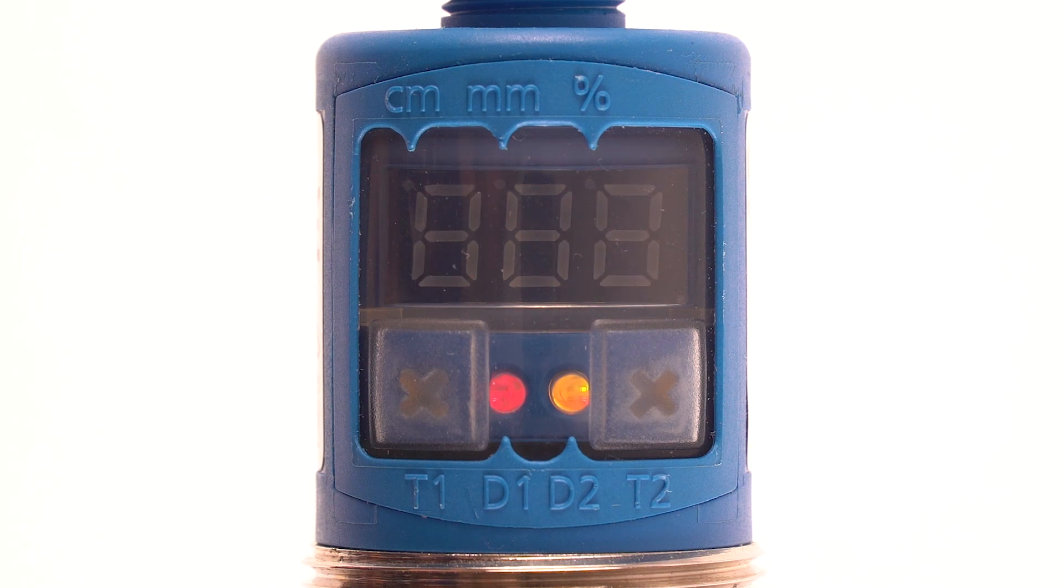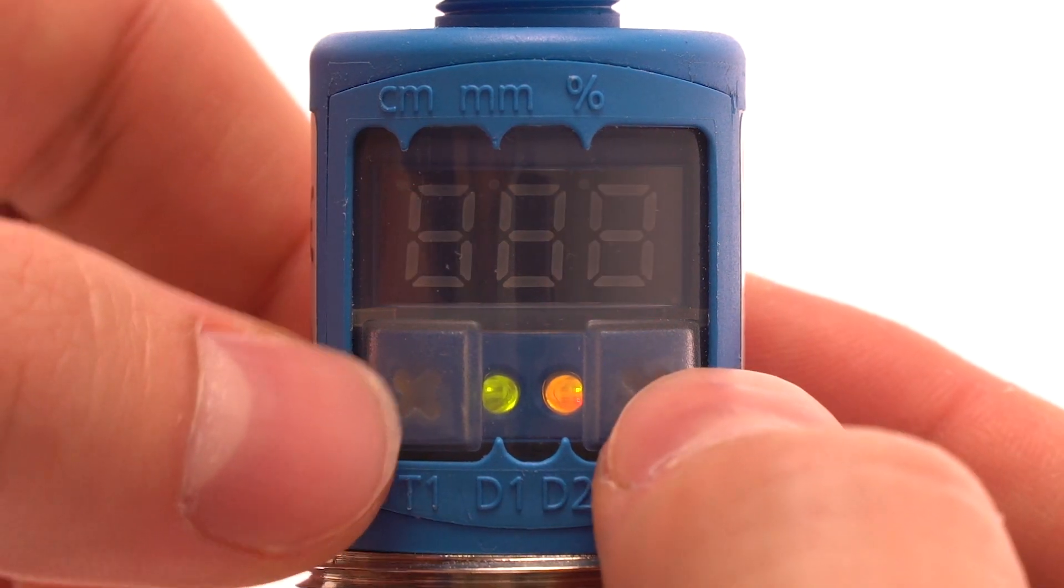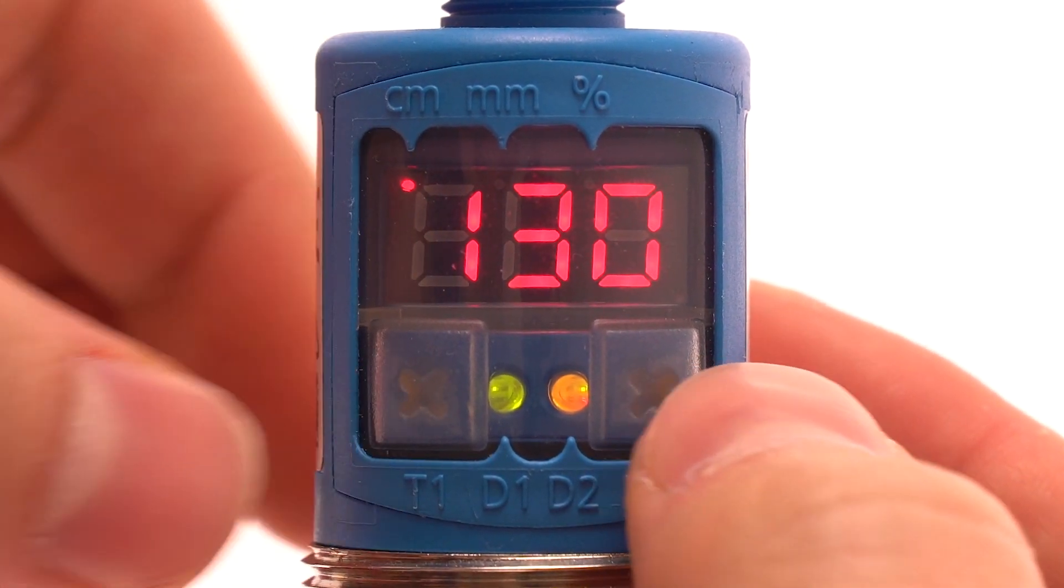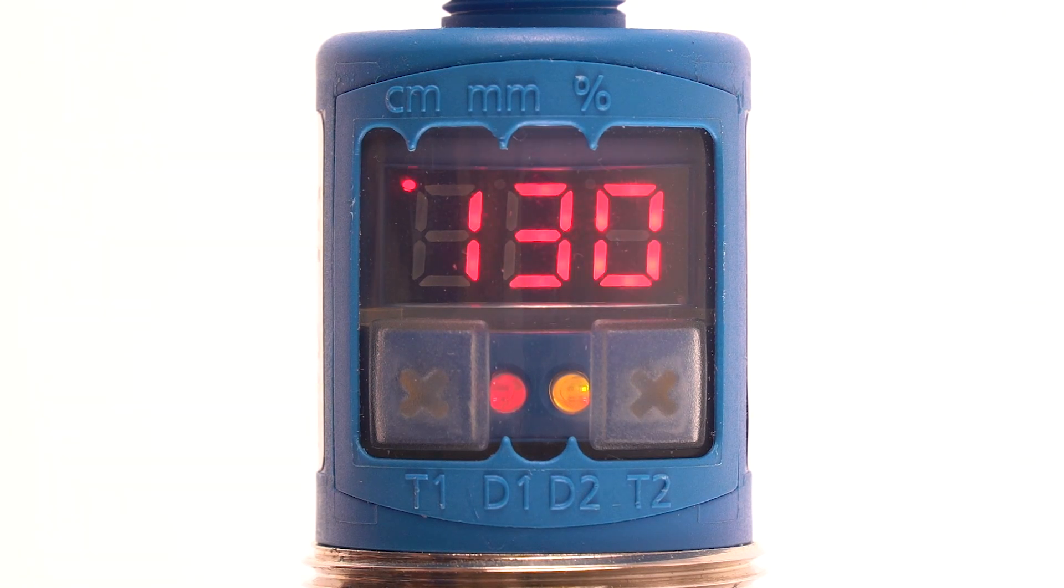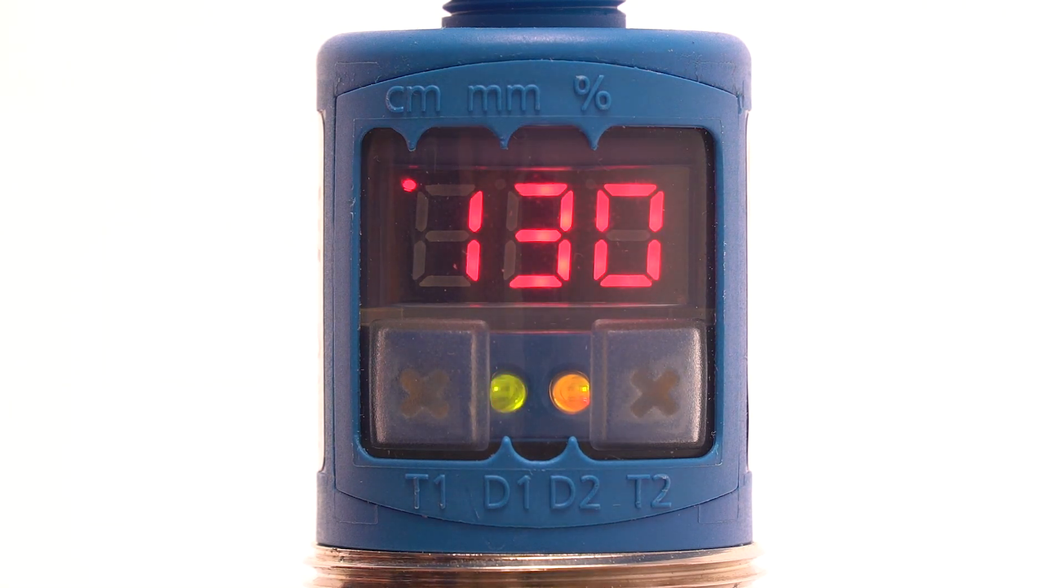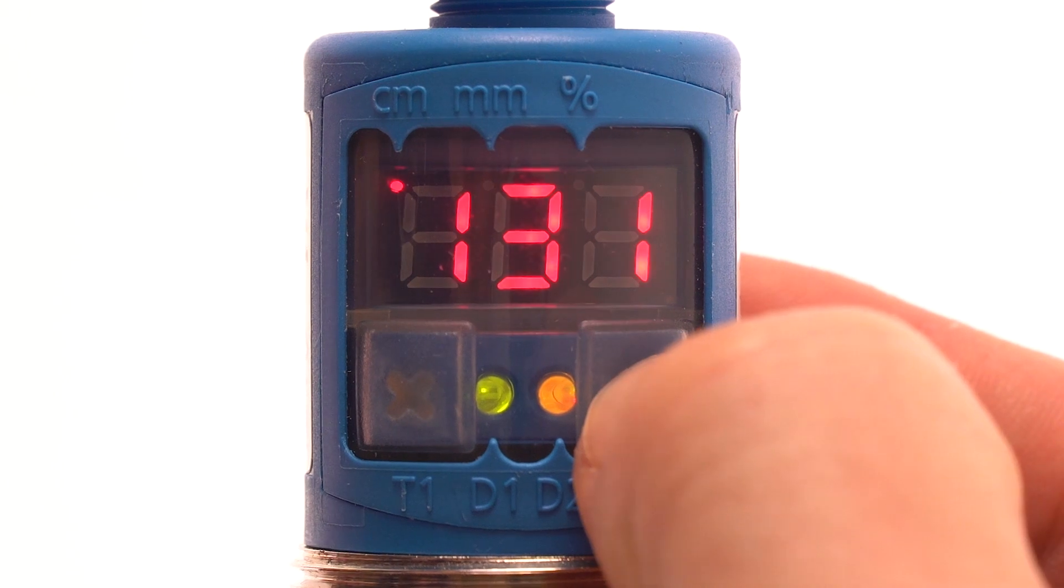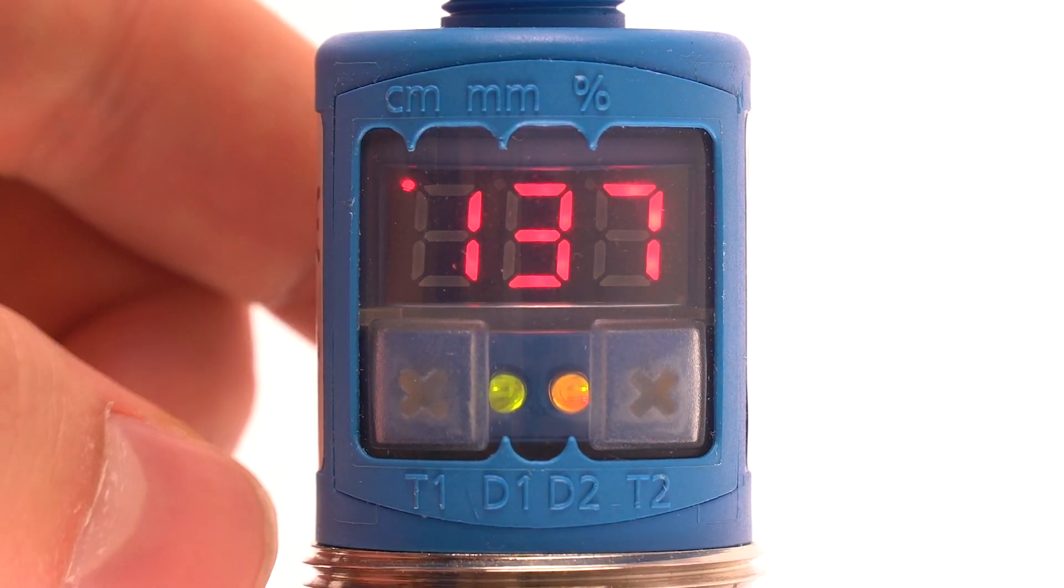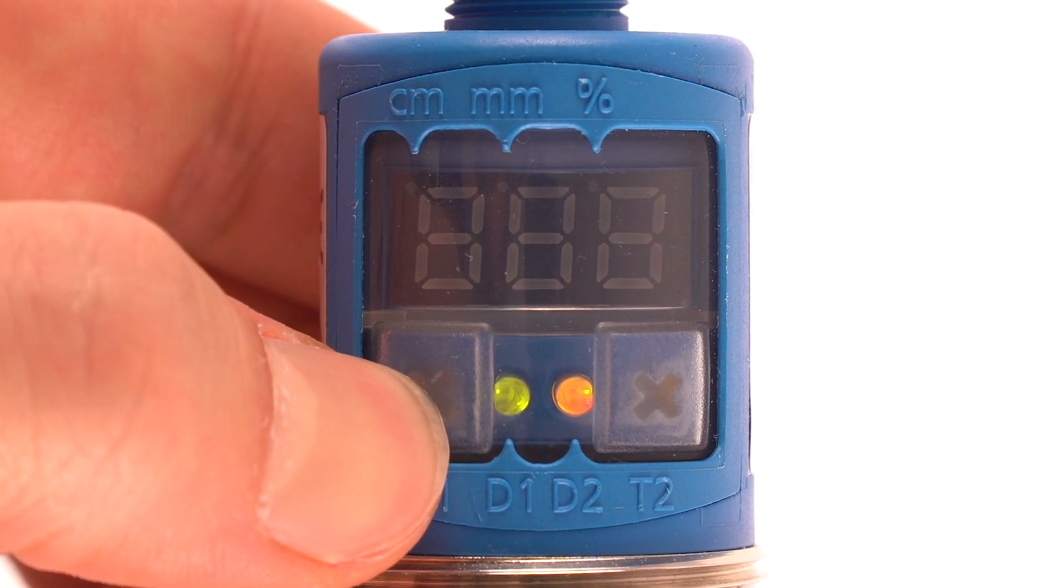To move to the next step, press T1 and T2 at the same time again. Set the far limit of the analog output scaling in millimeters or centimeters.